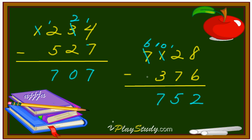Then, 6 minus nothing. That means 6. The answer is 6752. That's it.